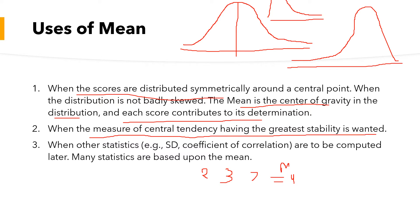When a stable measure of central tendency is needed, we use the mean value. If we want to go further into statistical analysis, mean is the basic statistic required to calculate other statistics like standard deviation and coefficient of correlation. All parametric statistical strategies use the mean value, while non-parametric strategies use the median and mode, which represent the midpoint of the data. Many statistics are based on the mean.